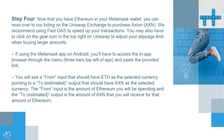Step 4: Now that you have Ethereum in your Metamask wallet, you can head over to our listing on the Uniswap exchange to purchase Axion. We recommend using FastGas to speed up your transactions. You may also have to click on the gear icon in the top right on Uniswap to adjust your slippage limit when buying larger amounts. If using the Metamask app on Android, access the in-app browser through the menu (3 bars, top left of app) and paste the provided link. You will see a 'from' input with ETH as the selected currency, pointing to an estimated output with AXN as the selected currency. The 'from' input is the amount of Ethereum you will be spending, and the estimated output is the amount of AXN you will receive.